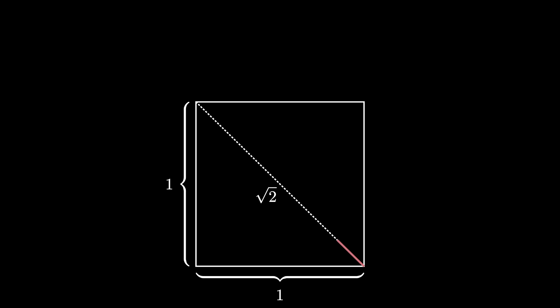So if we draw a line segment to the midpoint of the square on that diagonal, it has a length of square root of 2 over 2. Now we can draw a horizontal line back to the square that has a length of 1 half.